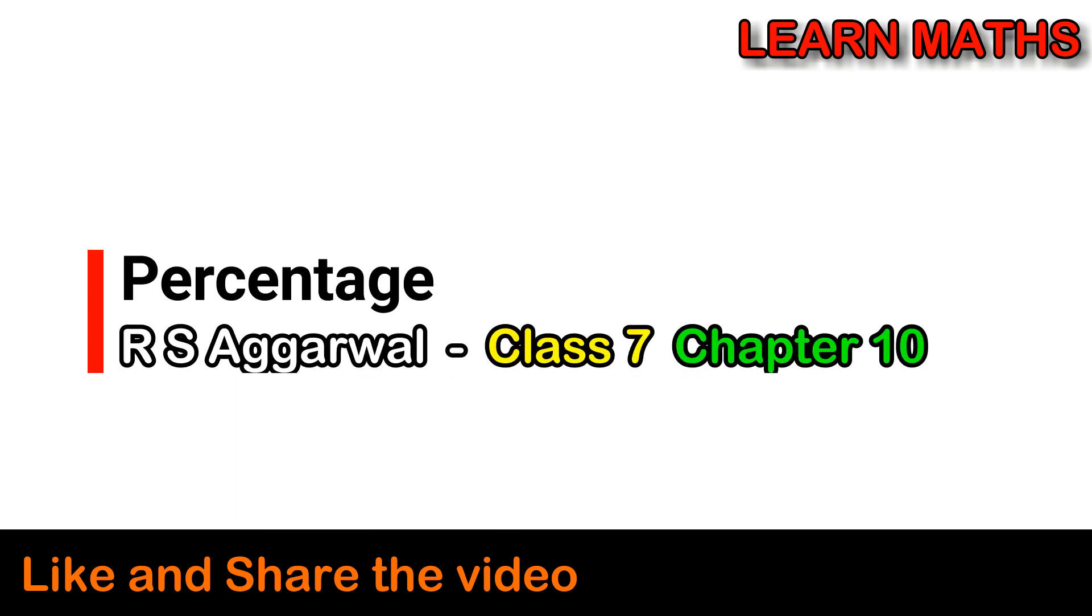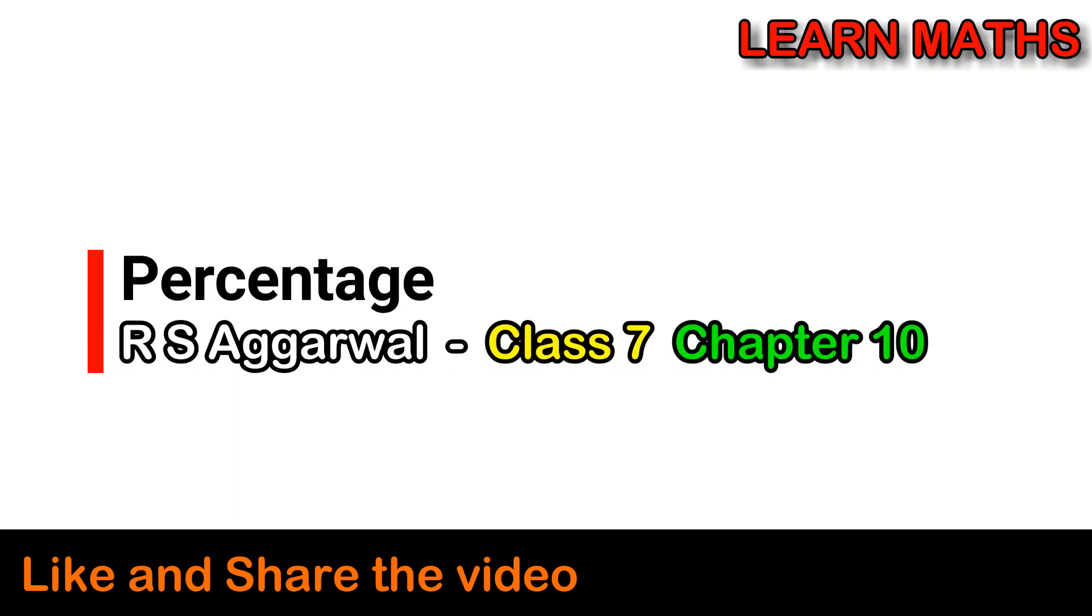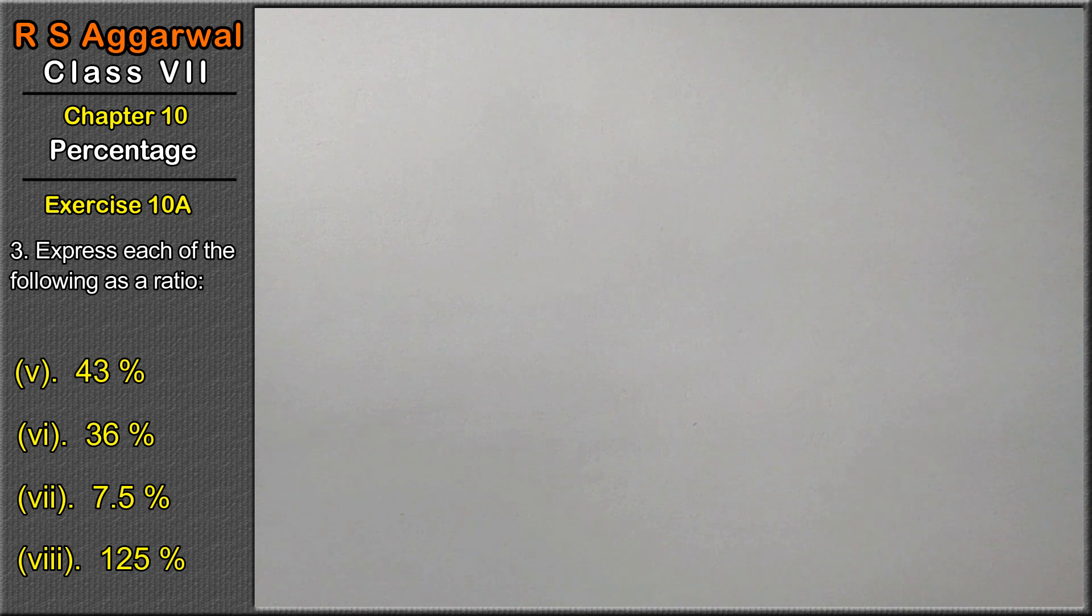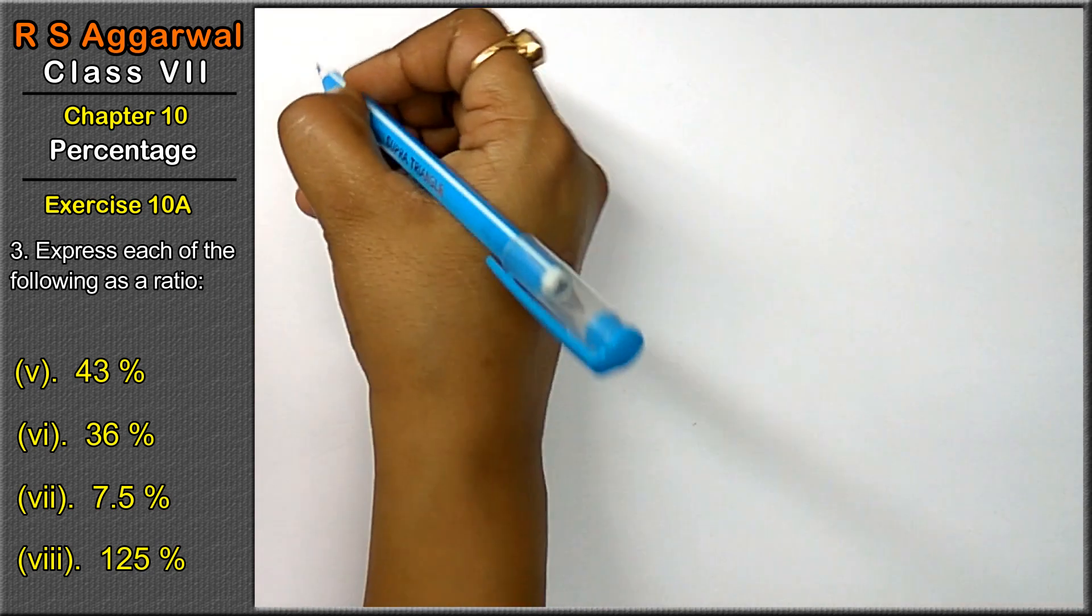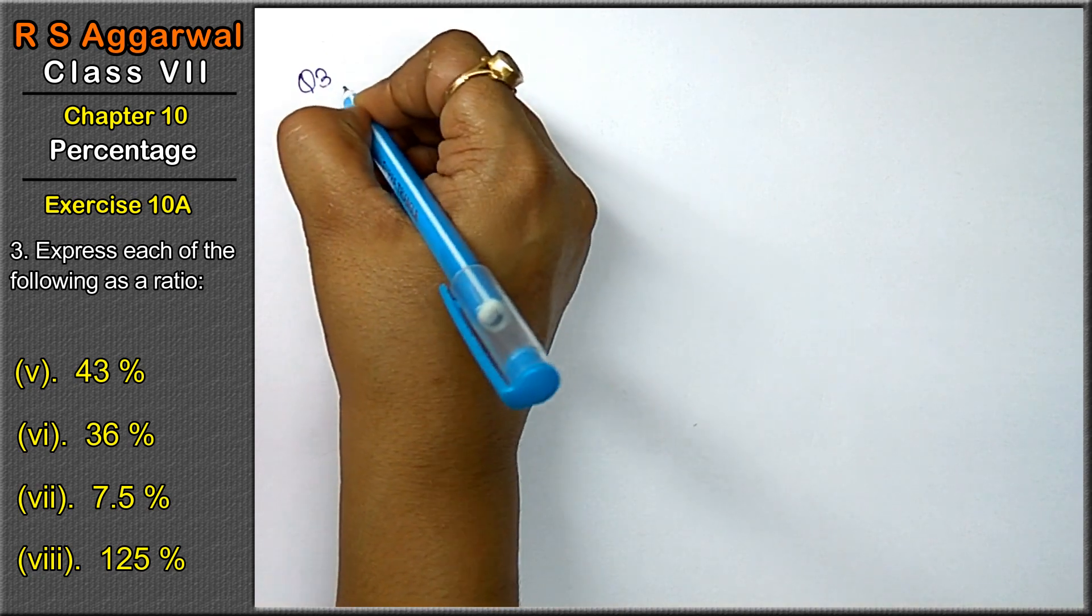Let's do question number third of exercise 10A that is percentage. Question number third is express each of the following as the ratio. Question number third is the first part.